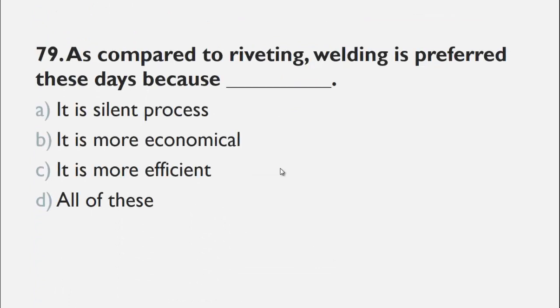MCQs number 79 is, compared to riveting, welding is preferred these days because it is silent process, it is more economical, it is more efficient and d all of these. Welding is preferred to riveting because welding have all of the following advantages. So, the right choice for this question is d all of these.